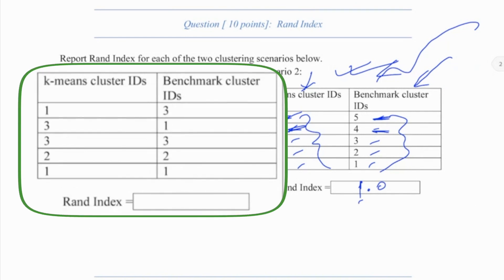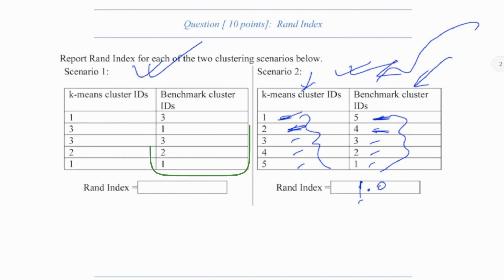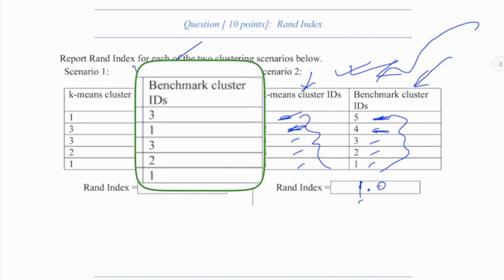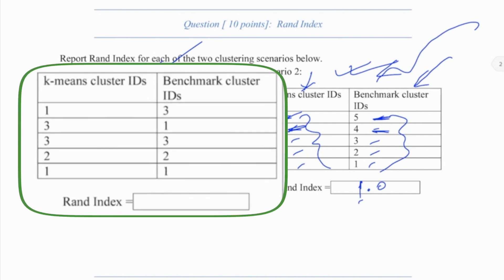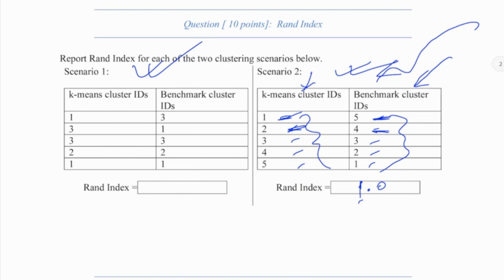Now let us take a look at the problem at left. Here is an outcome of a clustering algorithm — in this problem, K-means. These are the ground truth labels, or the benchmark labels. For this, we cannot directly say what the RAND index value is. The answer is 0.6. Let us see how we can compute it. When we compute RAND index, remember that the RAND index formula is true positive plus true negative divided by true positive plus true negative plus false positive plus false negative.